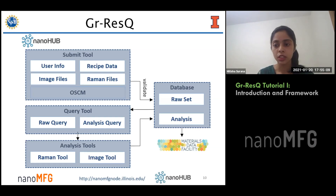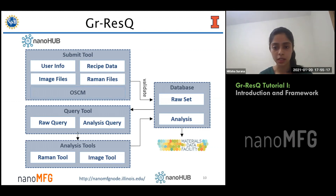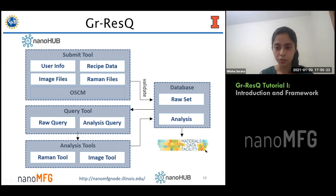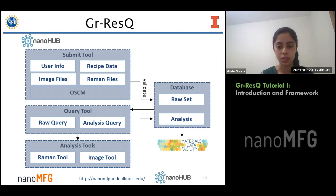After the completion of all analysis, the dataset is updated and periodically pushed to the Materials Data Facility, or MDF, where files are archived and assigned a DOI — a digital object identifier — which can later be used to refer to those recipes.